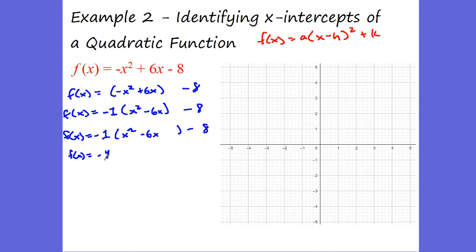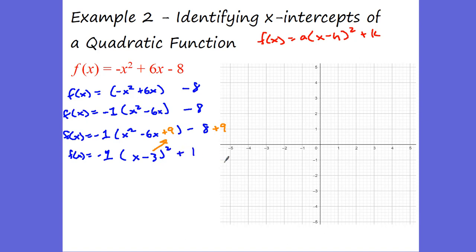We know a equals negative 1, so this will be a concave down graph. Now we complete the square. We take the coefficient of x, which is negative 6, divide by 2 to get negative 3 — giving us x minus 3 squared. Negative 3 squared is positive 9, so we're adding 9 inside. Since we factored out negative 1, this is really subtracting 9 from the expression, so we add 9 to the outside, giving us plus 1.